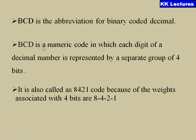BCD is a numeric code in which each digit of the decimal number is represented by a separate group of 4 bits. It is also called the 8421 code because of the weights associated with the 4 bits as 8, 4, 2, and 1 when moving from left to right.